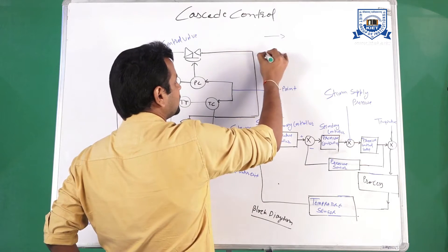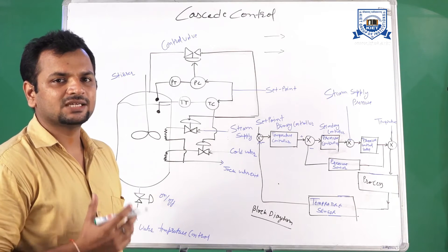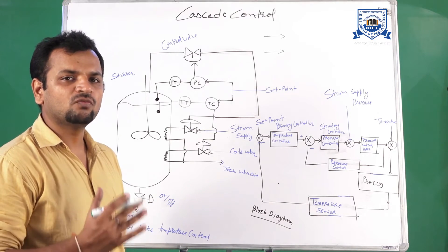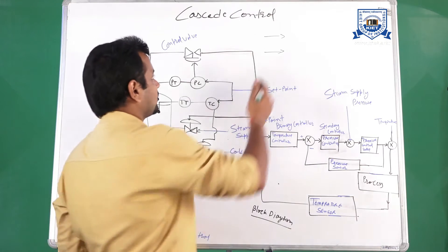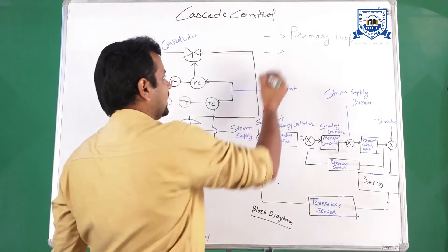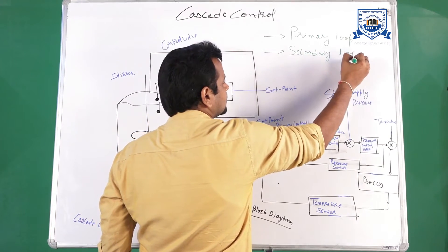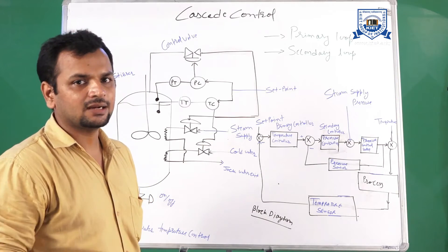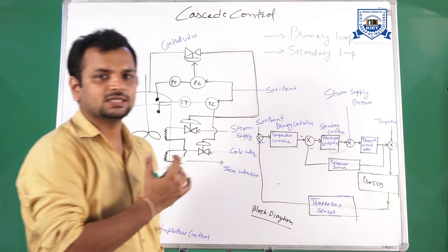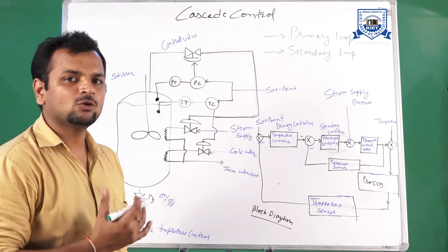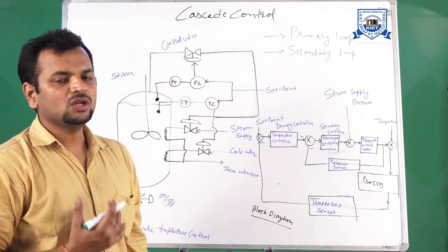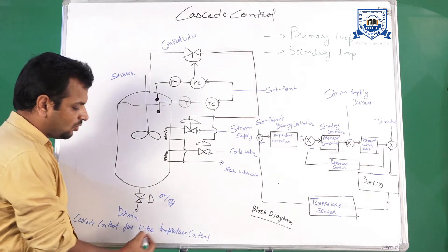In cascade control, suppose we are controlling two variables like pressure and temperature. What we do is define a separate control loop for each variable — one loop for measuring or controlling each variable. One loop is a primary loop for controlling one variable, and one loop is a secondary loop for controlling the other variable. We divide the whole process into two loops: one primary loop and one secondary loop. This makes control easier. For example, take the cascade control of water temperature control.